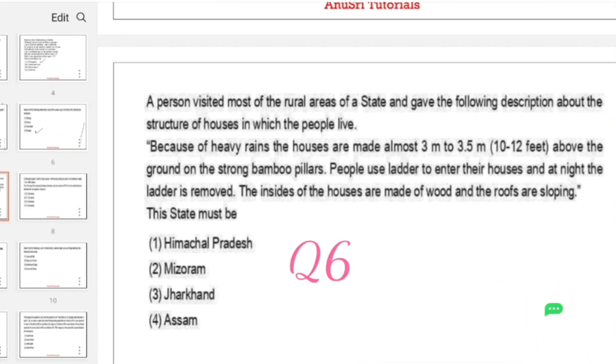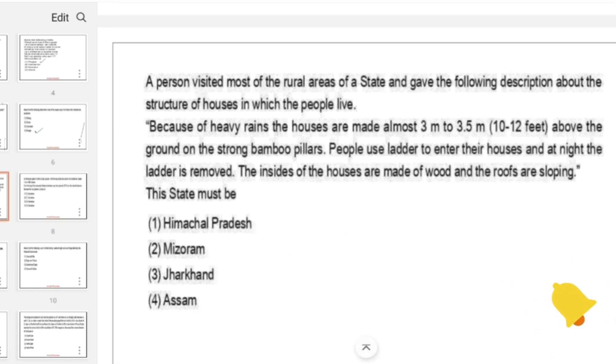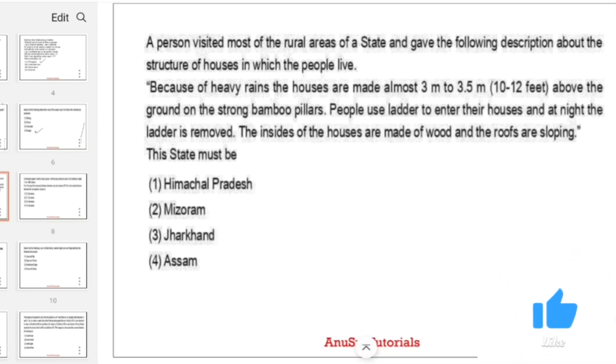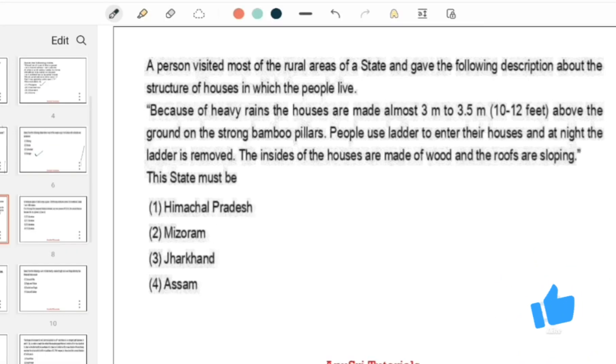A person visited the rural areas of a state and gave the following description about the structure of houses: Because of heavy rains, the houses are made almost 3 meters to 3.5 meters, that is 10 to 12 feet, above the ground on strong bamboo pillars. People use ladders to enter their houses and at night the ladder is removed. The insides of the houses are made of wood and the roofs are sloping. Options are: Himachal Pradesh, Mizoram, Jharkhand, and Assam. Assam has heavy rains, so the option is Assam.